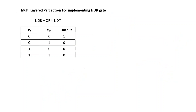Let us move on to the multilayered perceptron for implementing the NOR gate. We know that NOR is equivalent to OR and NOT. I hope you now understand the reason why we went through the implementation of OR gate and NOT gate first before implementing NOR. What NOR does is: whatever be the value of your OR function of the two variables, whenever you take the inverse of that function — you just complement that output — you get the output for your NOR. So when X1 and X2 are both zero, the OR output would be zero, and its complement is one. For all other cases, the output will be zero.